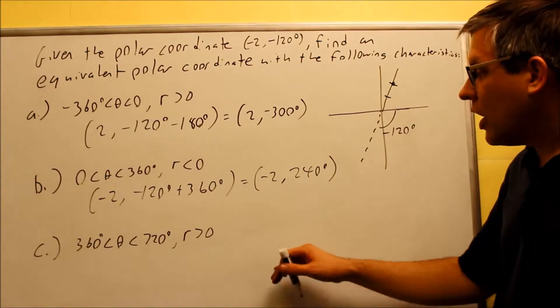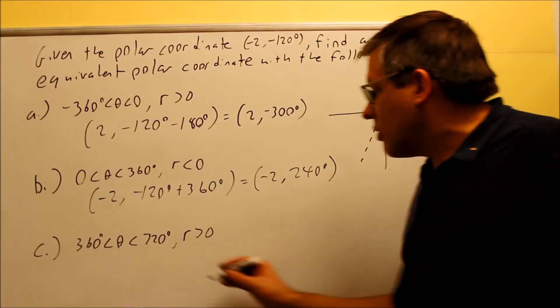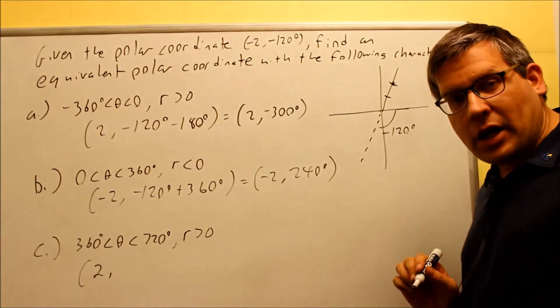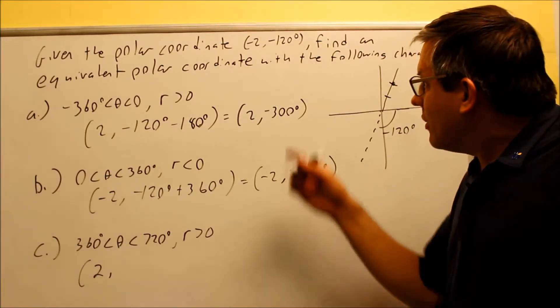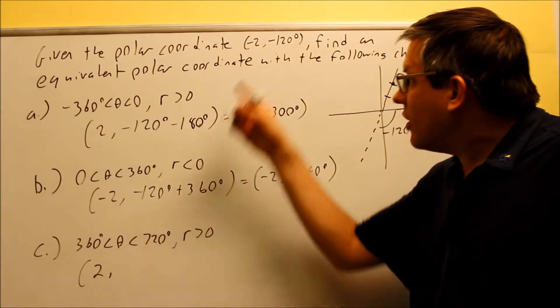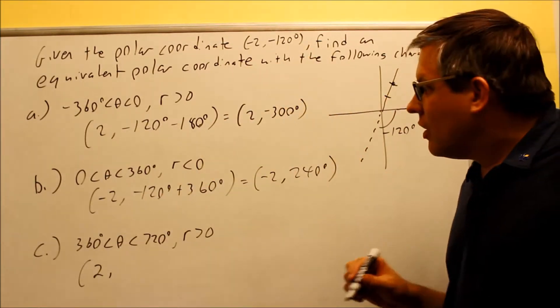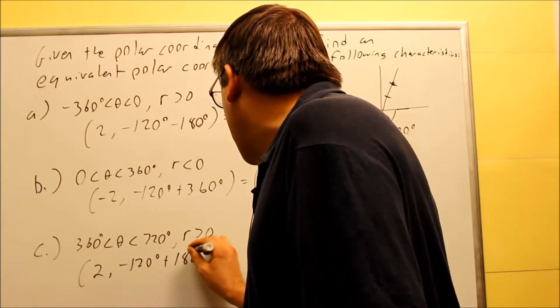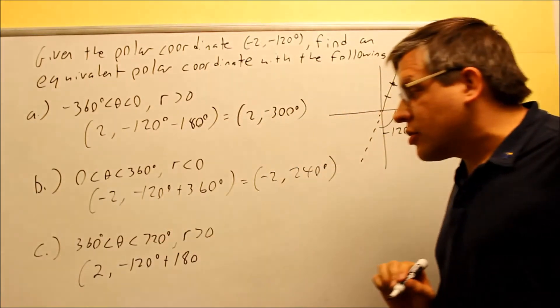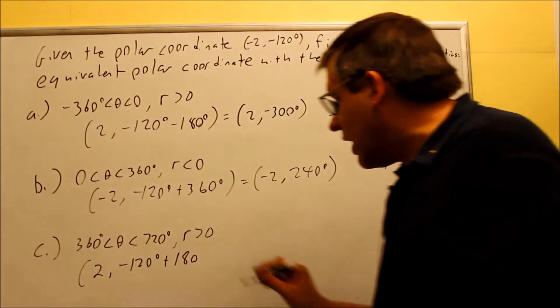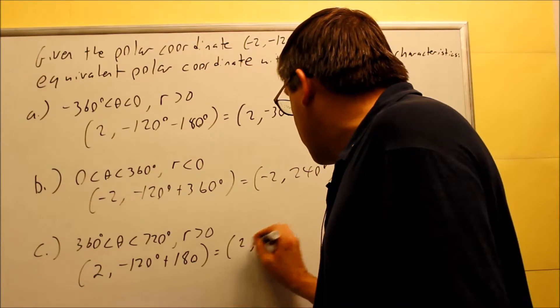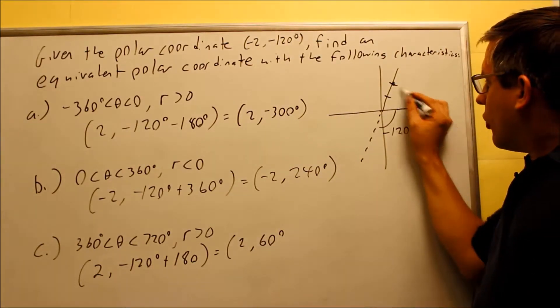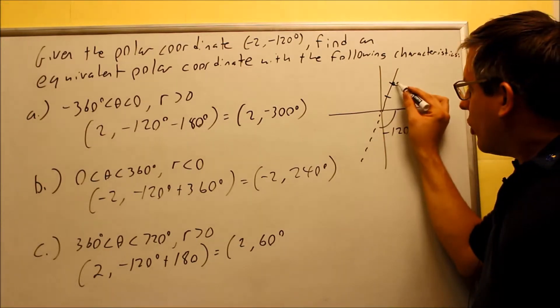Last one. I want the r to be greater than 0, so this time I do need to change the sign of the r from negative to positive. So this time I need to work with 180 because I'm changing the sign of the r from negative to positive. I start with my original angle, negative 120, and I'm adding 180. I definitely need to add it because I want my answer to be positive there. So I'm going to add 180, and I get 2 and 60 degrees.